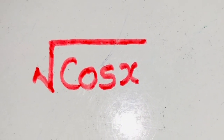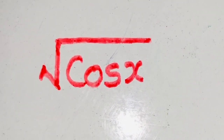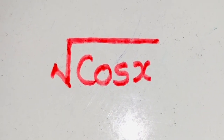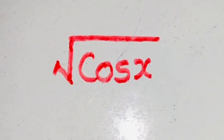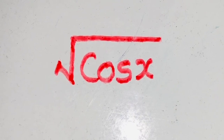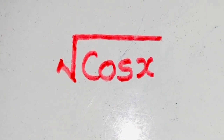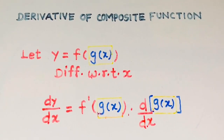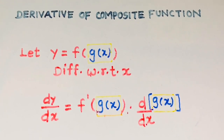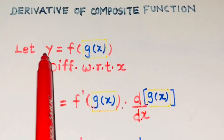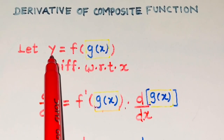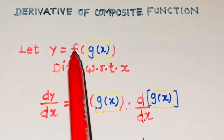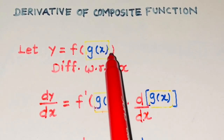These are known as composite functions. So in this section, let's study how to differentiate composite functions. Now in general, let's consider a composite function, that is, y is equal to f of g of x.